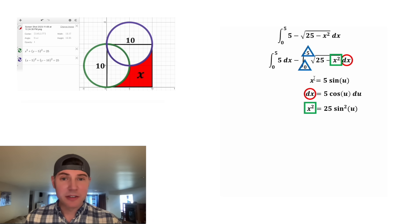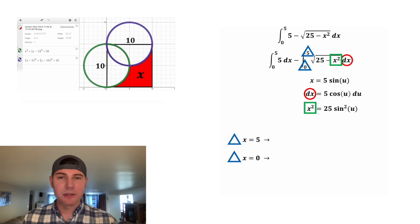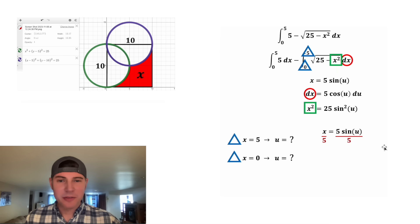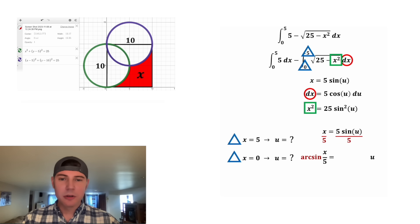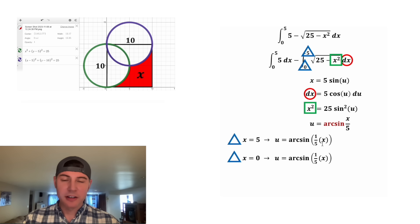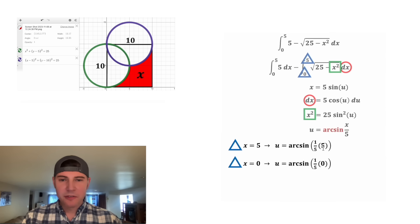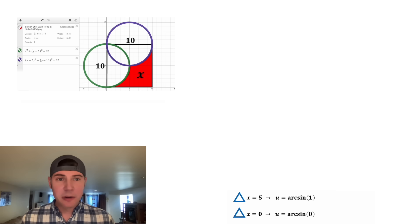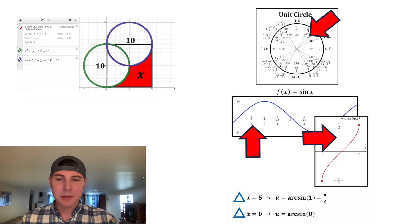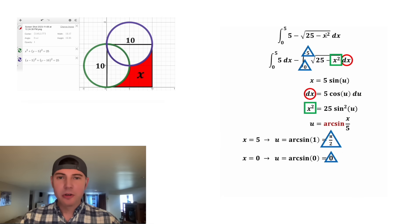We also have to replace the limits of integration, which were x equals 0 to x equals 5. From x equals 5 sine u, we divide both sides by 5 to get x over 5 equals sine u, then take arc sine of both sides to get u equals arc sine of x over 5. Plugging in x equals 5 for the upper limit gives arc sine of 1, which is pi over 2; plugging in x equals 0 gives arc sine of 0, which is 0. So our new limits of integration are 0 to pi over 2.